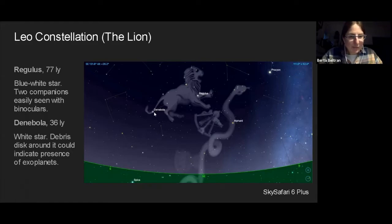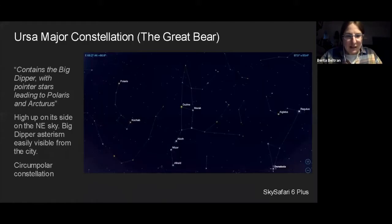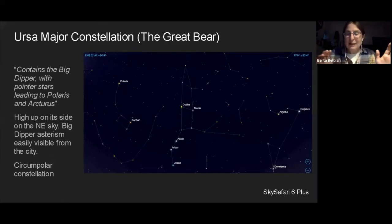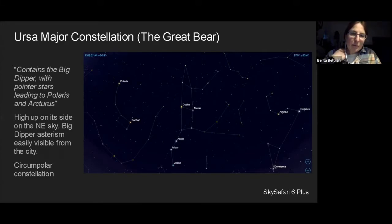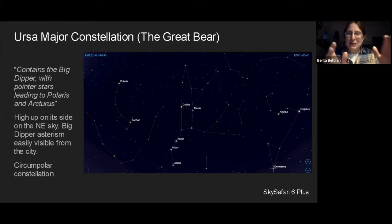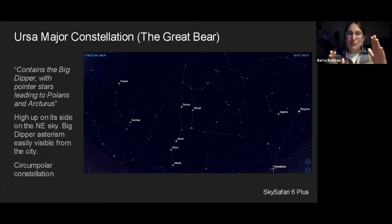Moving to the second constellation for April: Ursa Major, which Alistair has already located on the whole sky chart. It's a circumpolar constellation — meaning it's in the sky all year round. The constellations around Polaris, the north star, spin around it throughout the night, completing a circle. That's not the constellations moving, but the rotation of the Earth, whose axis happens to be pointing toward Polaris.